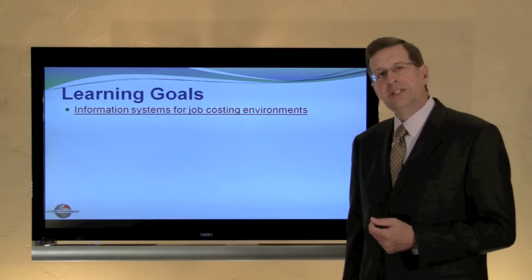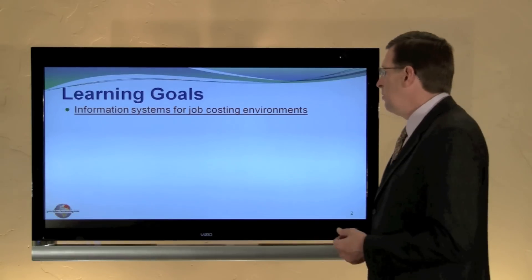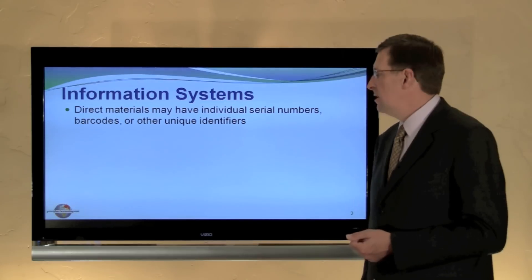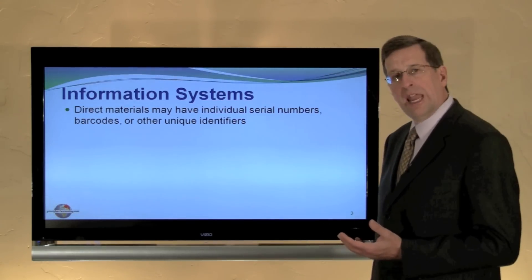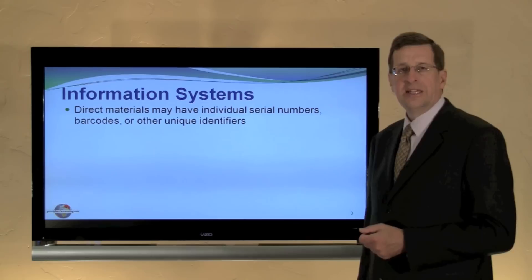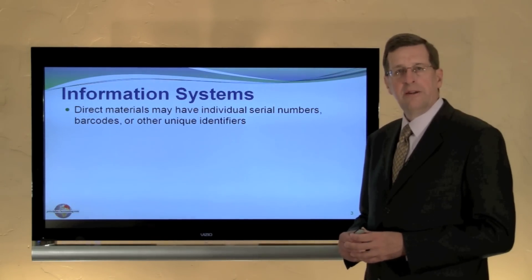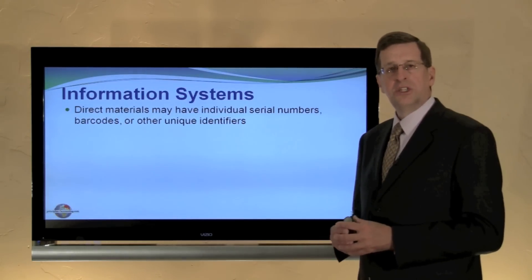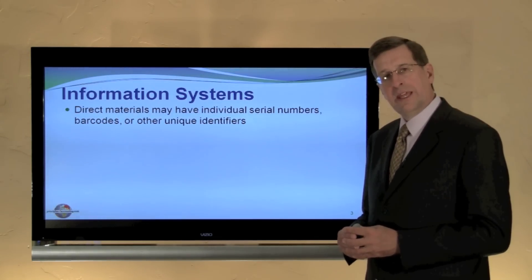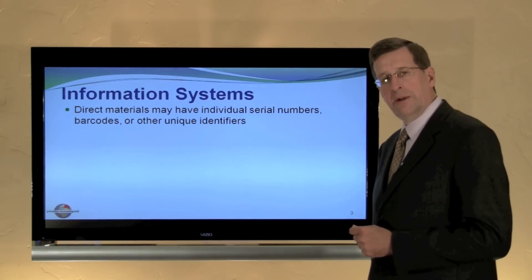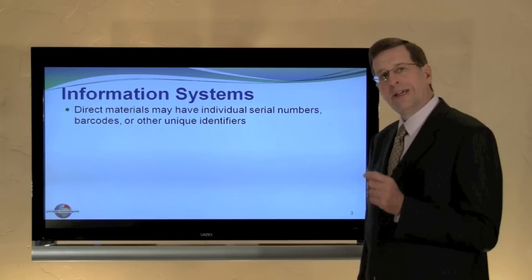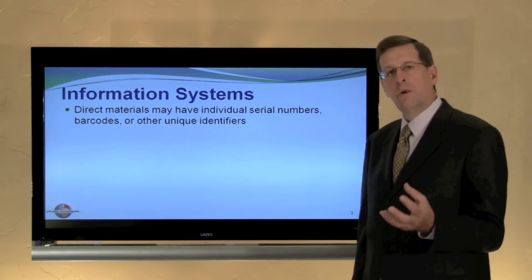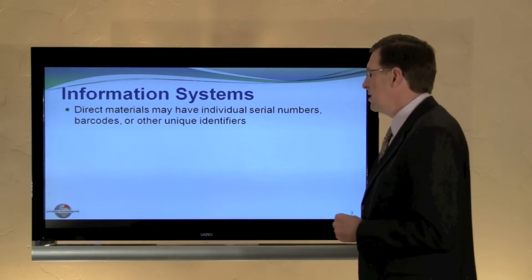There are other implications of the modern information system environment that play into job costing. One of those is simply how we keep up with direct materials. Many direct material items, if they're expensive at all, will have a direct identifying serial number. If you look at your computer, you'll probably notice there's a serial number on it. But if you were to take that computer apart and look at the various circuit boards and chips installed within it, you'll also find serial numbers attached to those. The manufacturer of that computer could tell you exactly the parts — not just the types of parts, but the exact specific part by serial number — that's installed within that computer as it comes out of the factory.